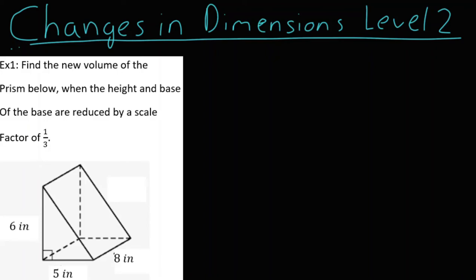Alright, welcome to Changes in Dimensions Level 2. Now in this very first example, we want to find the new volume of the prism below when both the height and the base are reduced by a scale factor of one-third. I want you to notice what's a little bit different about this one is now instead of changing one dimension, we're actually going to be changing two dimensions.